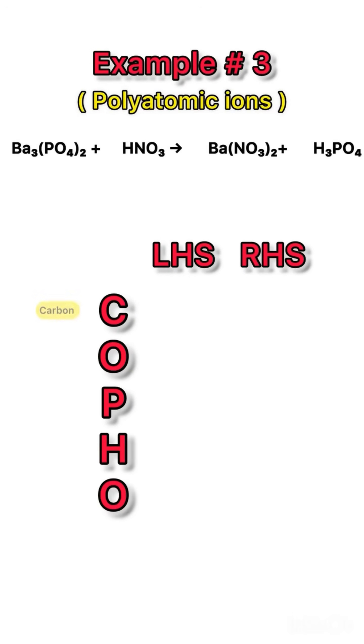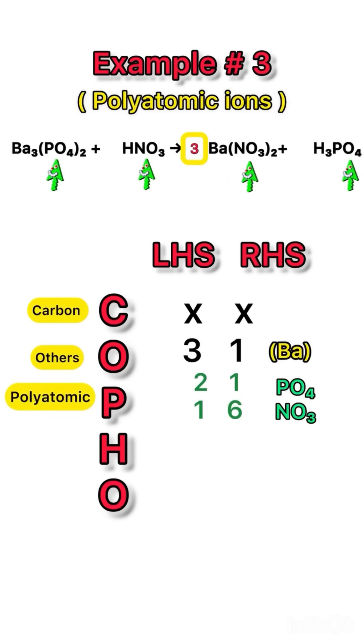Now the polyatomic example. Here we keep PO4 and NO3 as complete units. No carbon, so cross. Balance barium as well. Now comes to polyatomic. First PO4, left side it is 2 and right side it is 1, add 2 on the right to balance it. NO3 is our second polyatomic here. Left side it is 1 but right has become 6, so put 6 before HNO3 on left side to balance it.